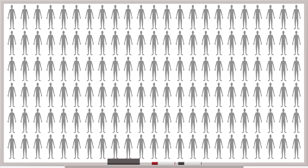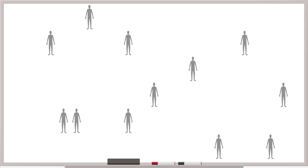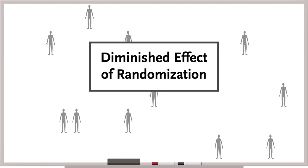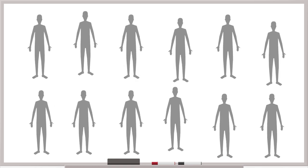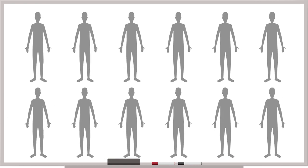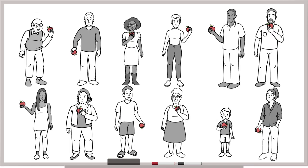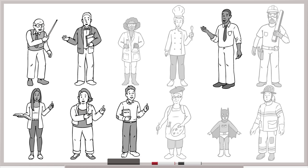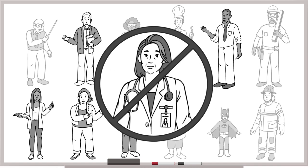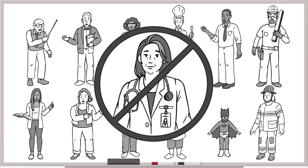First, selecting a smaller sample from a larger group diminishes the effect of randomization. Confounding factors that were previously balanced may be reintroduced. Imagine that the participants who ate apples, as compared to other fruit, were more likely to work as teachers. They might then be younger, with fewer chronic health conditions, and therefore might have fewer primary care visits than others in the trial.